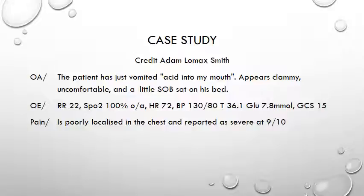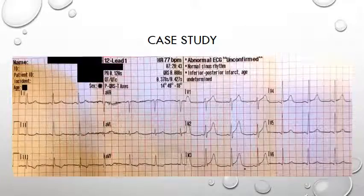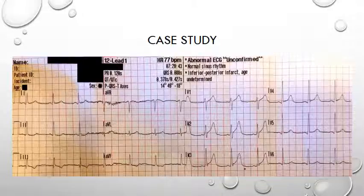Adam then went on to record a 12-lead ECG. Taking a systematic approach: the rate is about 75, regular and sinus in origin, and the axis is normal with the computer reading that as 49 degrees.